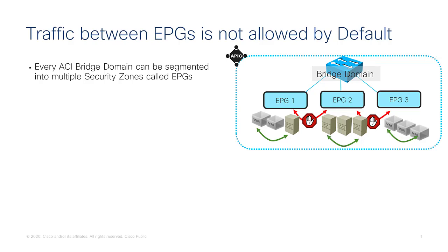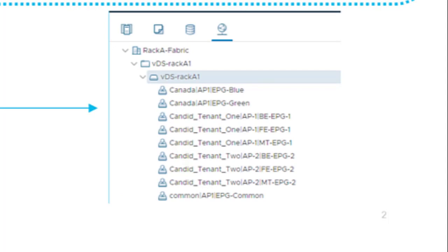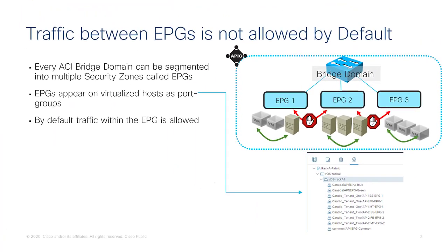For servers in a given EPG to talk to servers in a different EPG, you need what ACI defines as a contract, which you can think of as an ACL in a classic IOS device. Endpoint groups are security zones that can include both virtual machines and physical servers, appearing on a virtualized host as port groups to which you attach VMs. If virtual machines or physical hosts are in the same endpoint group they can communicate without any contracts; if they are in different endpoint groups you need a contract to allow communication.